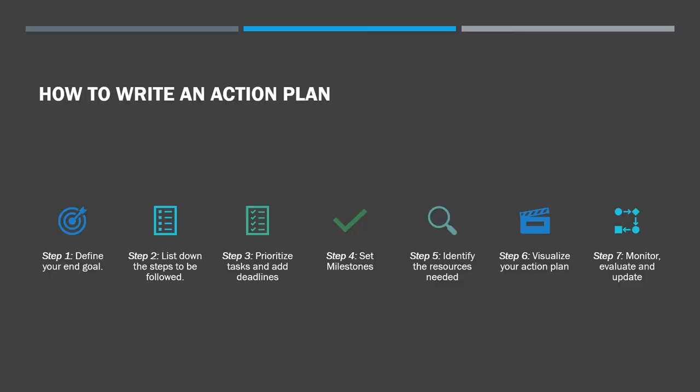How to write an action plan. Step 1: define your end goal. Step 2: list down the steps to be followed. Step 3: prioritize tasks and add deadlines. Step 4: set milestones. Step 5: identify the resources needed. Step 6: visualize your action plan. Step 7: monitor, evaluate, and update.